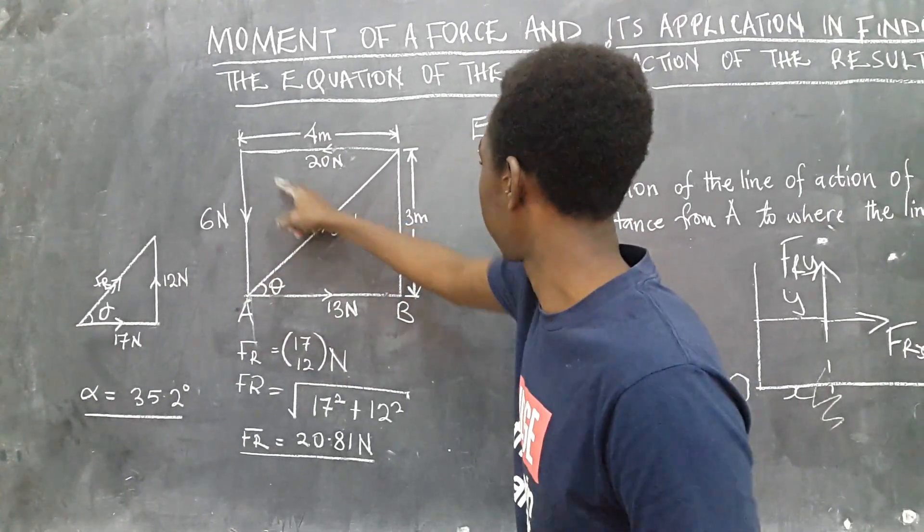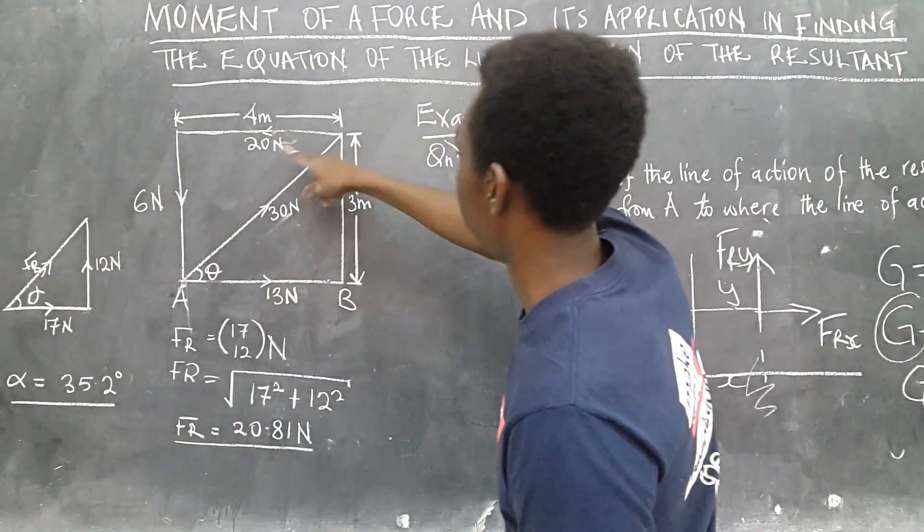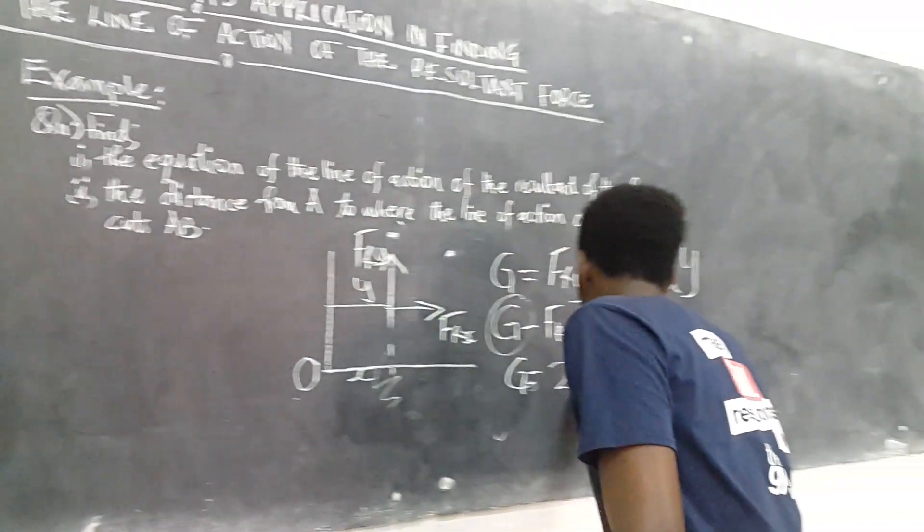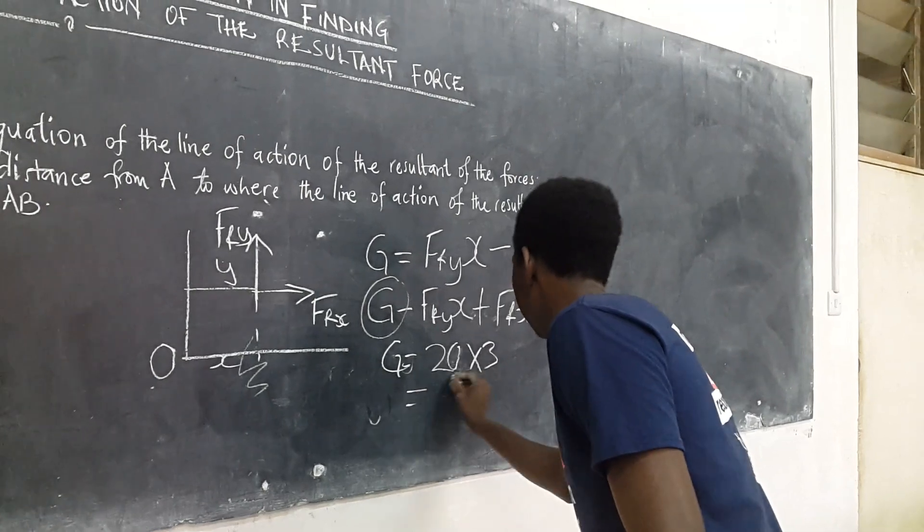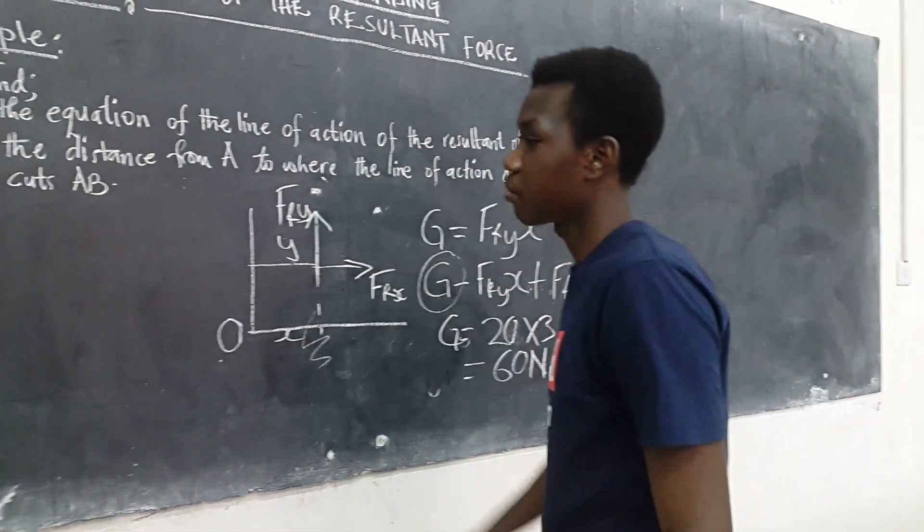its moment is zero plus the 6 newton force, its moment is zero and the 20 newton force, so the moment will be the force which is 20 and it's passing through the distance from A which is 3 meters and this force acts anticlockwise so we shall have 20 multiplied by 3 which is equal to 60 newton meters.